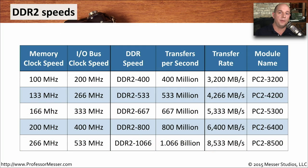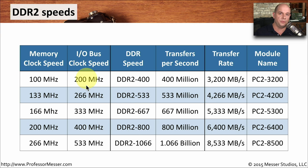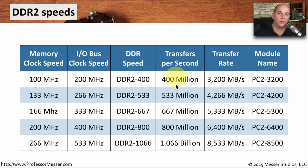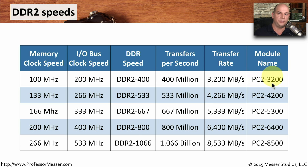Because of the architecture of DDR2, we're able to transfer twice as much information without changing the clock speed of the memory module. A memory module at 100 megahertz with DDR2 would need an I/O bus clock speed of 200 megahertz because it was transferring twice as much information over that bus. And since it's double data rate memory, it would be twice that amount — DDR2-400, meaning 400 million transfers per second. Multiplying by 8 gives us a transfer rate of 3,200 megabytes per second. Because this is DDR2 memory, we refer to it as PC2-3200 rather than the PC term used with regular DDR memory.